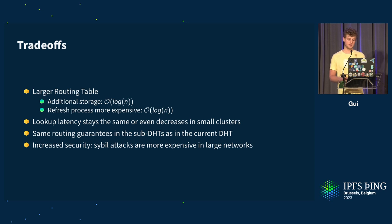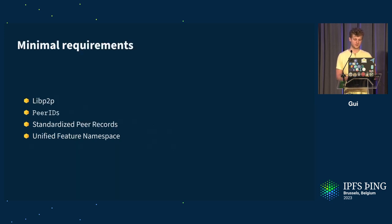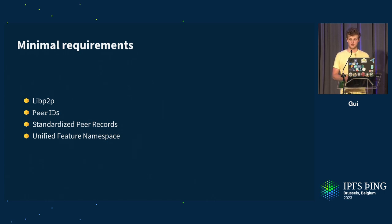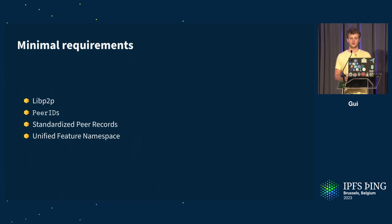We get the same routing guarantees and, as mentioned, increased security. The minimal requirement is to run LibP2P. We need peer IDs and standardized peer records — essentially agreeing that a peer record is a peer ID mapping to a multi-address and a feature. Signed peer records could be added as a feature later if desired by IPFS, without being a minimal requirement. We also need a unified feature namespace to ensure no conflicts between features.